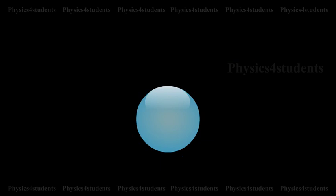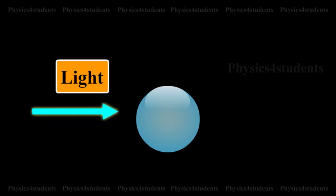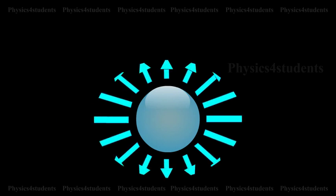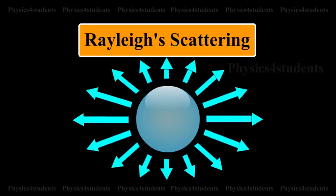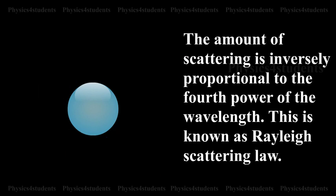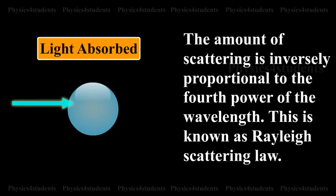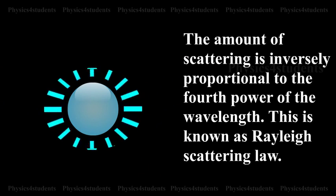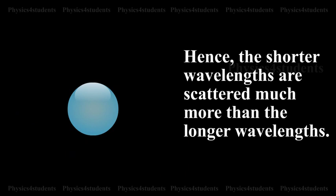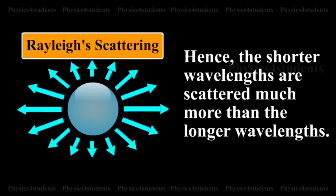The strength of scattering depends on the wavelength of the light and also the size of the particle which causes scattering. The amount of scattering is inversely proportional to the fourth power of the wavelength. This is known as Rayleigh Scattering Law. Hence, the shorter wavelengths are scattered much more than the longer wavelengths.